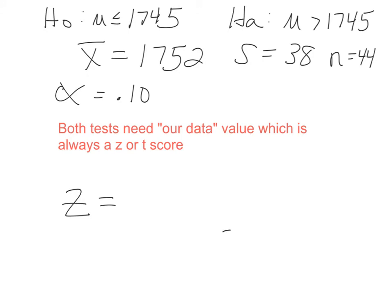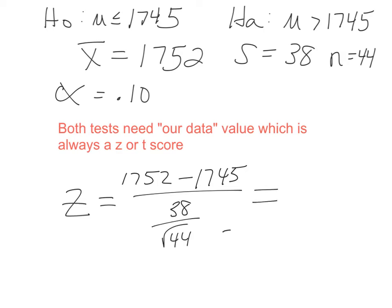The difference between the tests doesn't affect this first step. Because the sample size is bigger than 30, we use the z-score. No matter which test you run, you always start with your information as a cutoff — z or t. We take our sample average 1752, subtract the hypothesized average, and divide by the standard deviation over the square root of the sample size. That gives us a z-score of approximately 1.22.